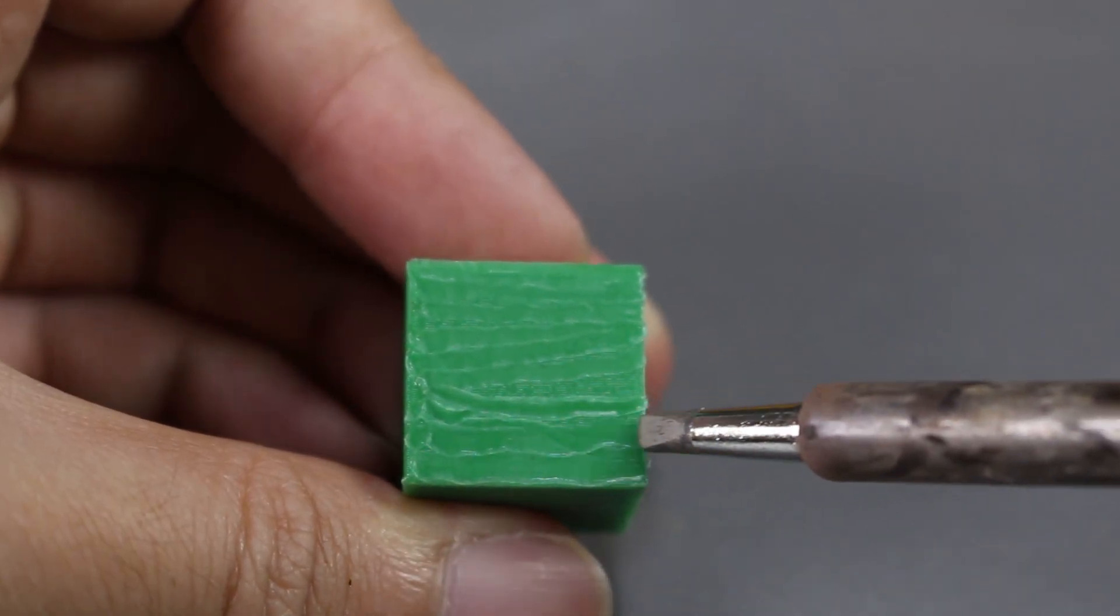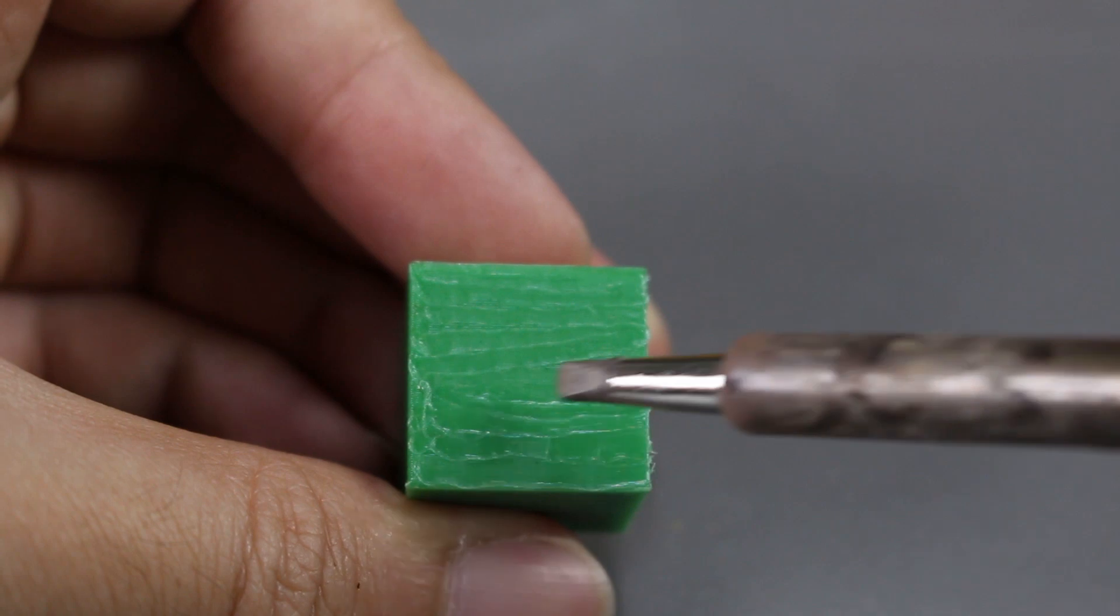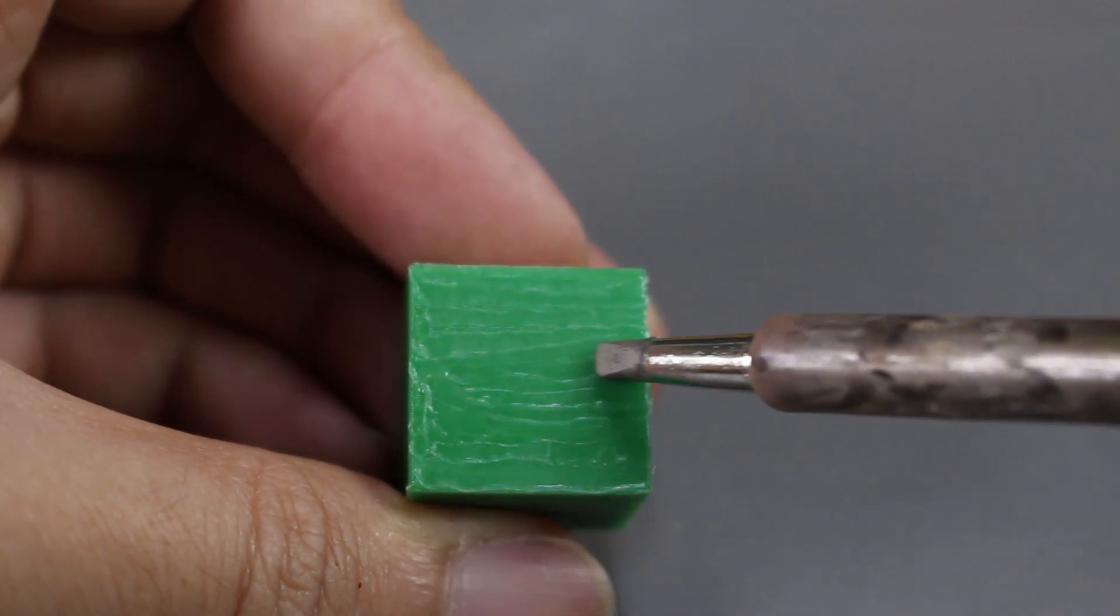I just can't seem to get used to using the soldering iron to smooth out the PLA. It's not turning out how I want it to be.